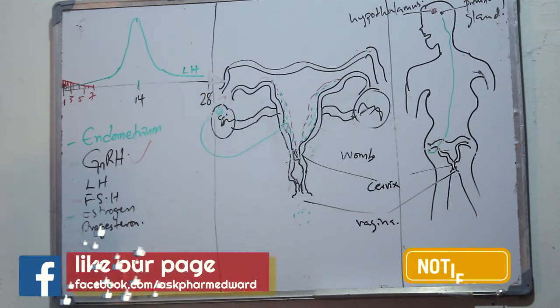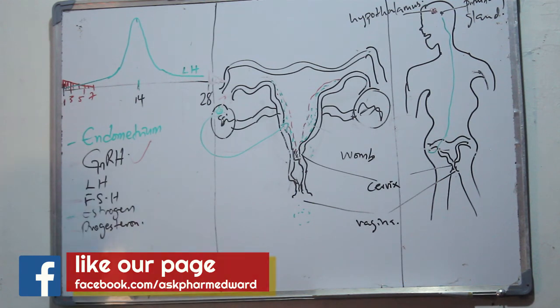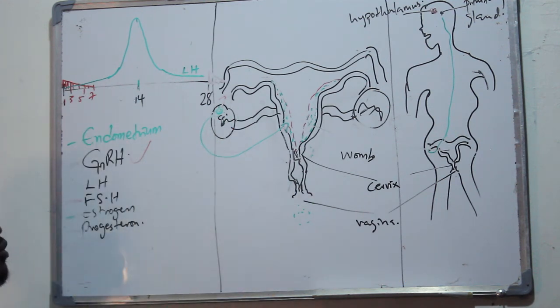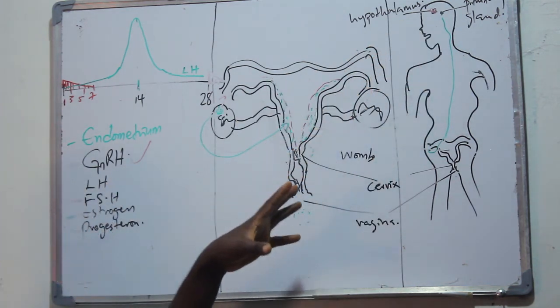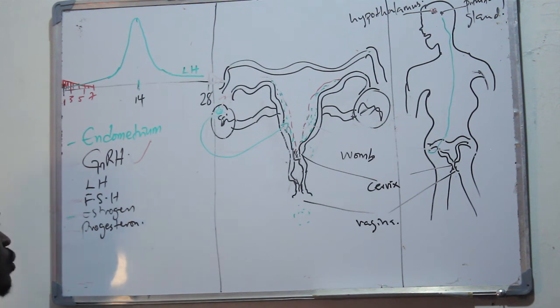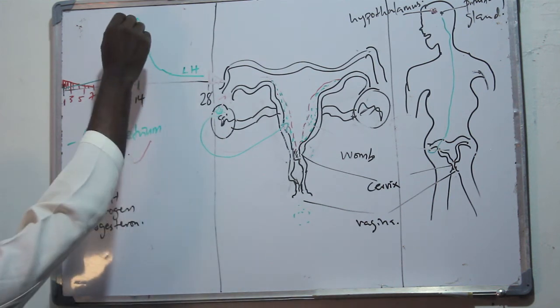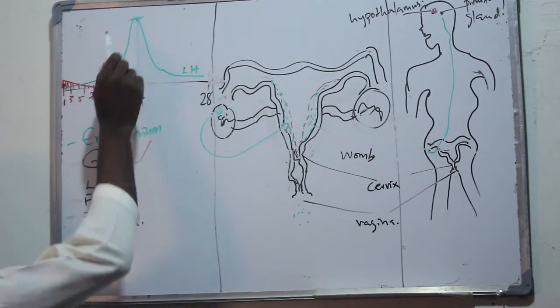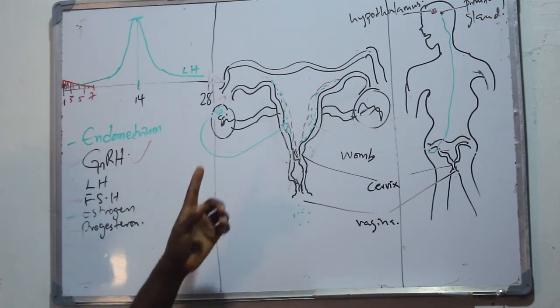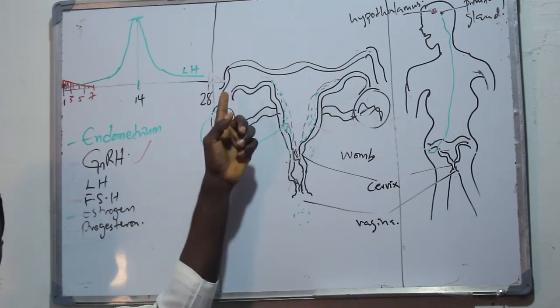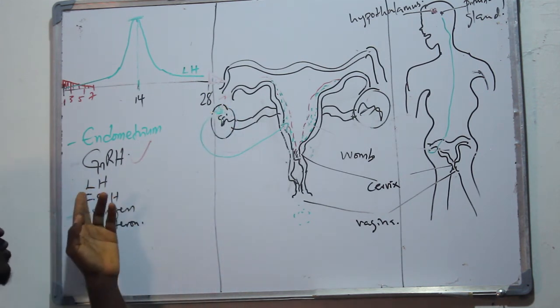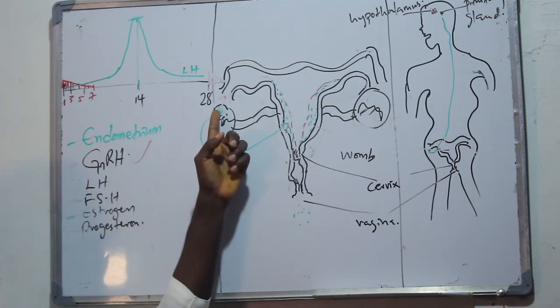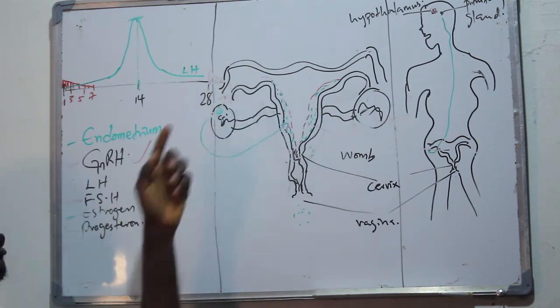Towards the 14th day of the cycle, that's midway into your cycle, the hypothalamus will also produce another gonadotropin releasing hormone which will in turn signal the pituitary gland to also start producing another special hormone called the luteinizing hormone. The luteinizing hormone will get to a particular peak on the 14th day of the cycle, and that peak will tear open the follicle to release the egg. The follicle has matured, so it requires the production of this luteinizing hormone to tear open the follicle and release the egg into the fallopian tube. The egg will start its journey through the fallopian tube into the womb.